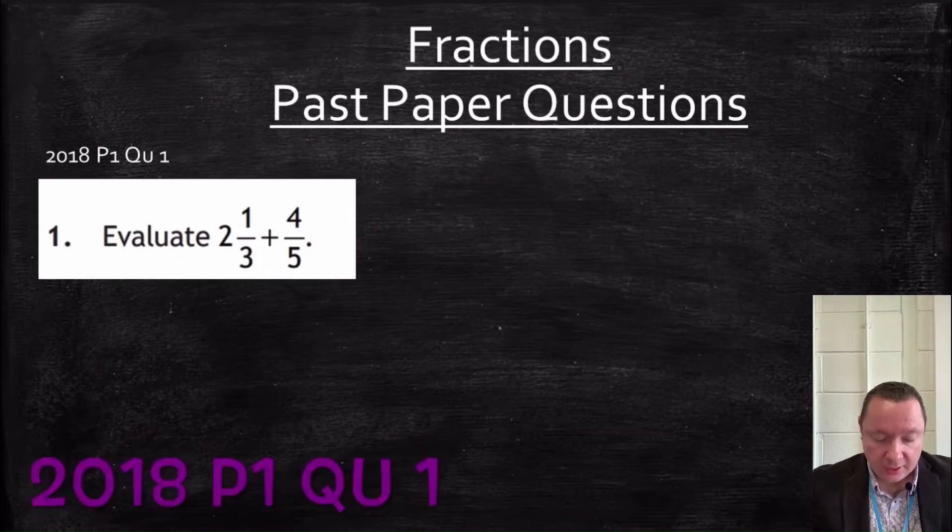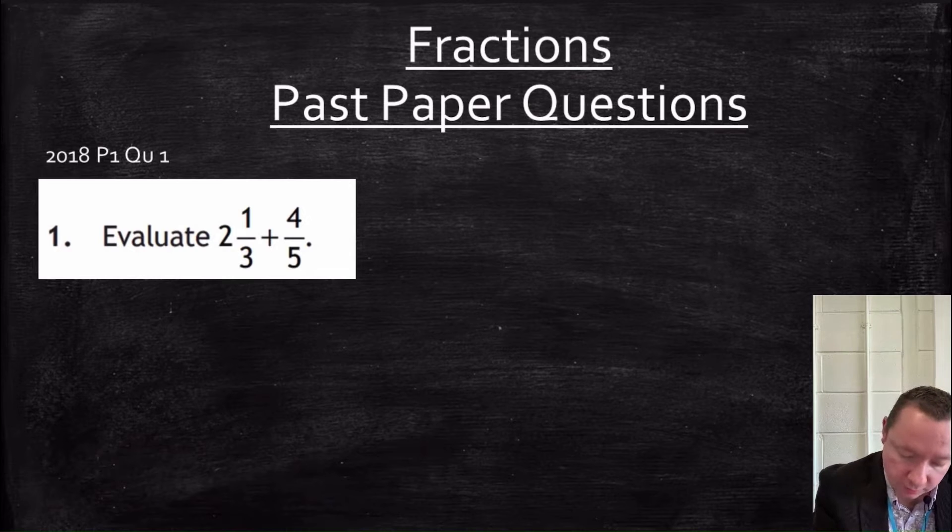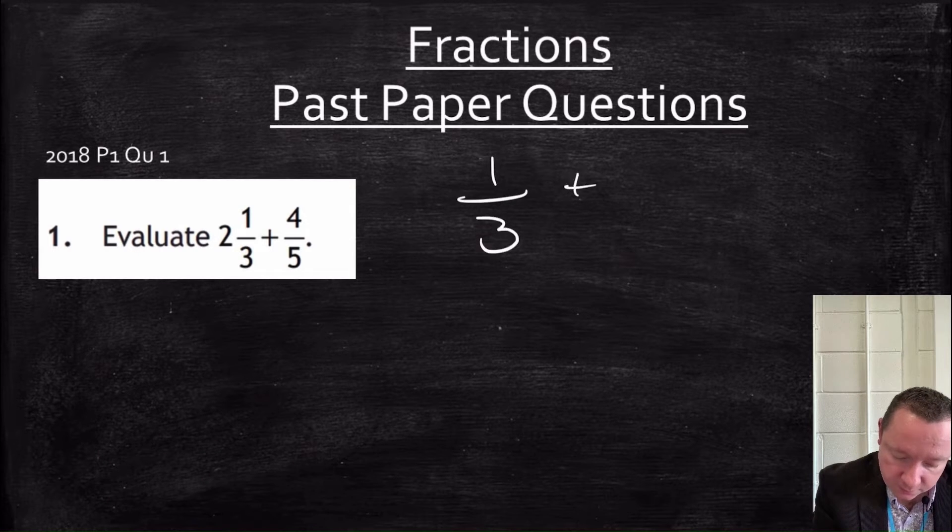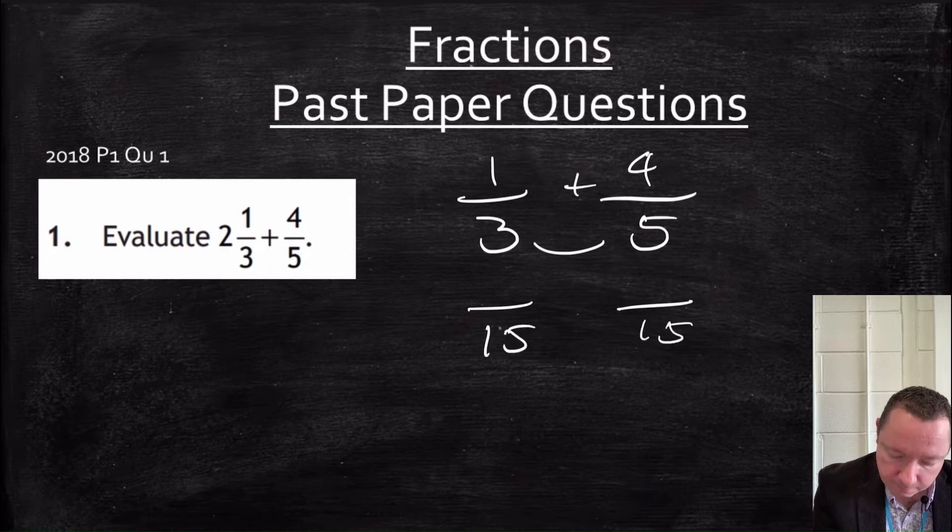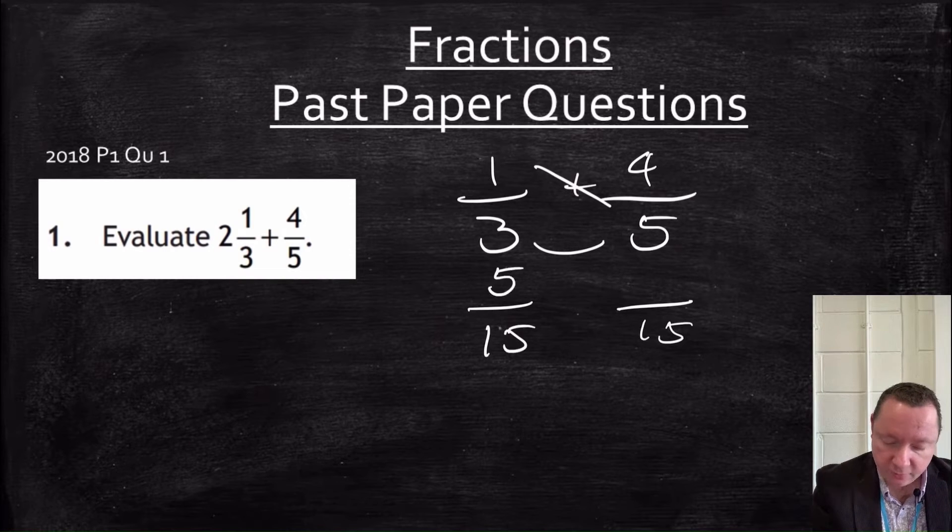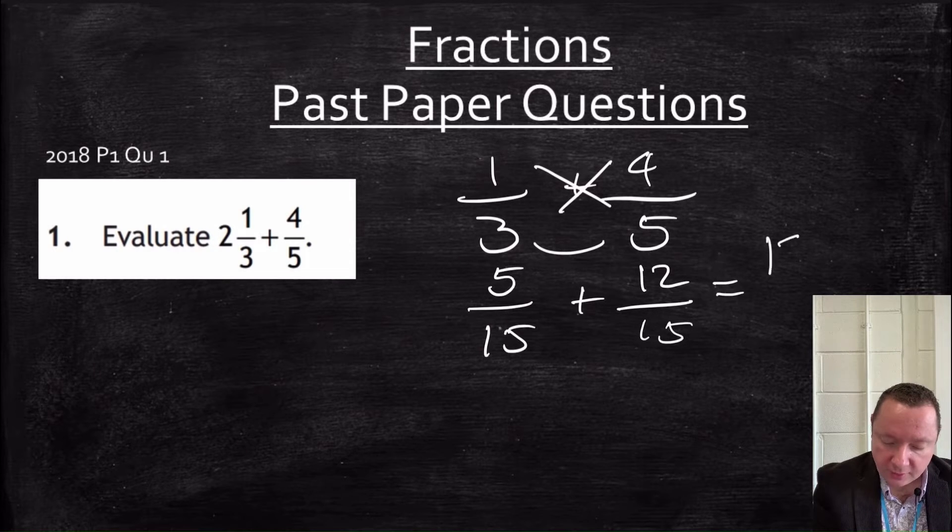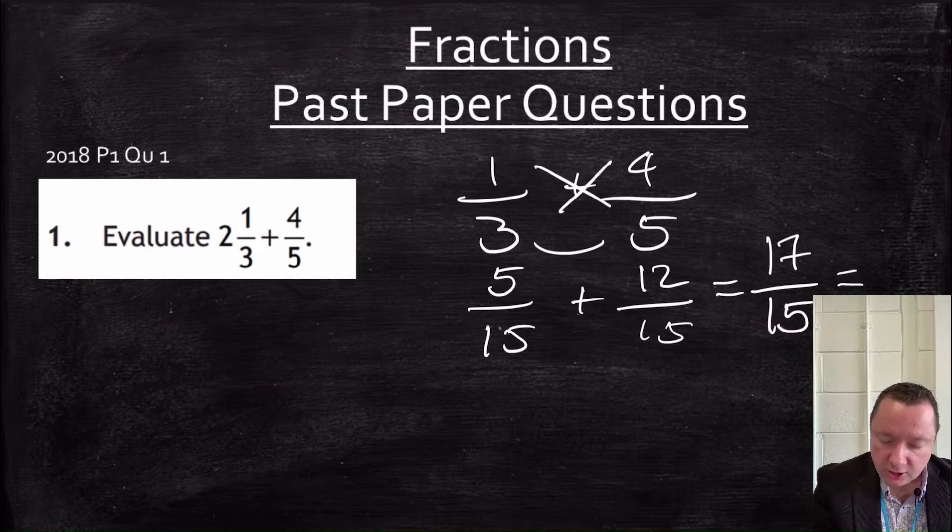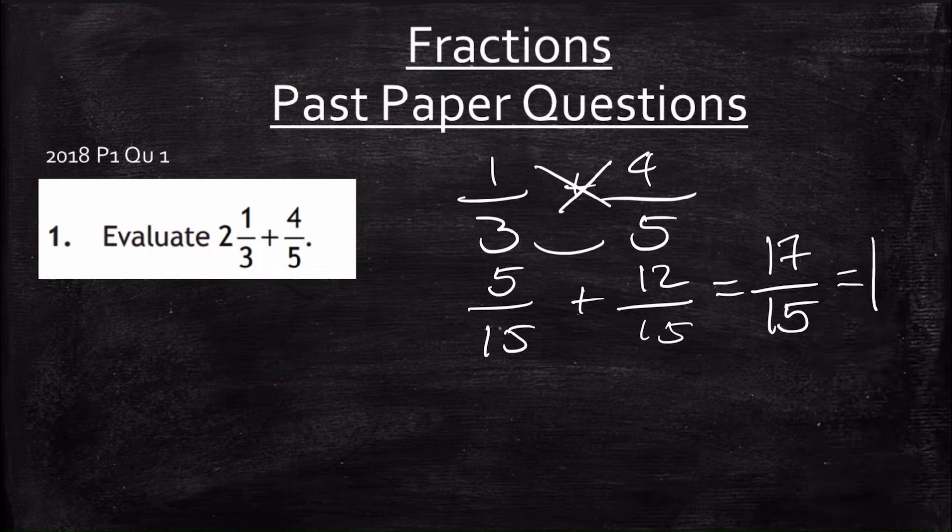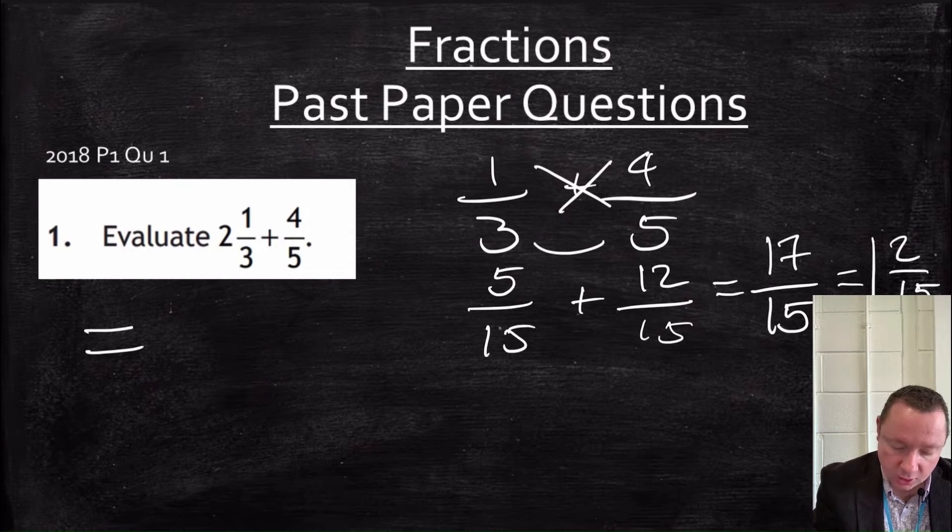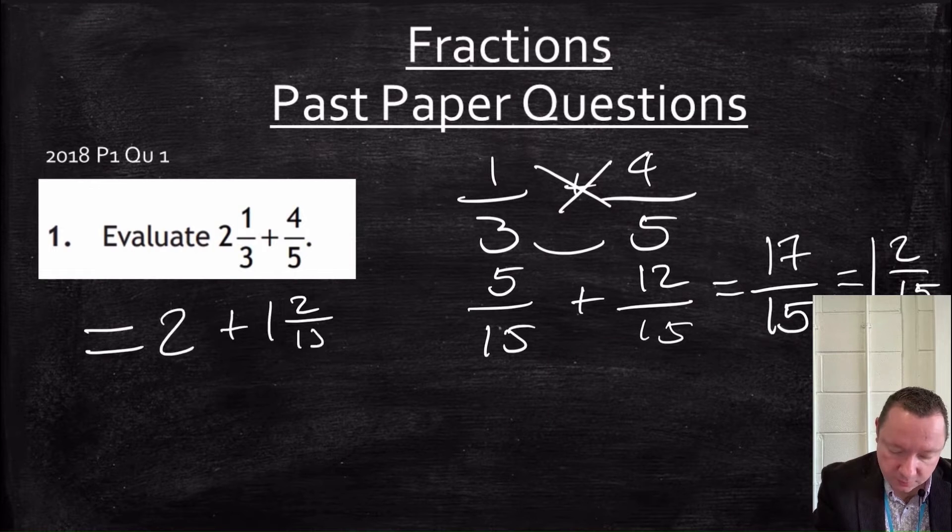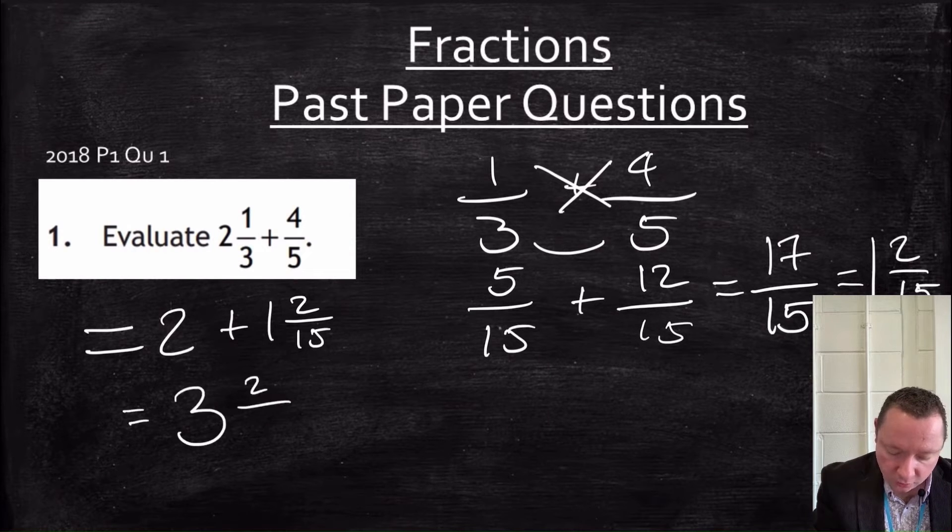Quite a common question to turn up. Evaluate 2 and a third plus 4 fifths. So the first thing I'm going to do is do my third plus my 4 fifths. 3 times 5 is 15, so that's my common denominator. 1 times 5 is 5 for the first fraction. 4 times 3 is 12. Putting it together, I get 12 plus 5 is 17 over 15. Changing it back to a mixed number, I get 1 and 2 fifteenths. Because 15 goes into 17 one time with 2 remainder. So the answer to the question, I've got 2, remember. So I've got 2 plus 1 and 2 fifteenths, which means I've got 3 and 2 fifteenths.